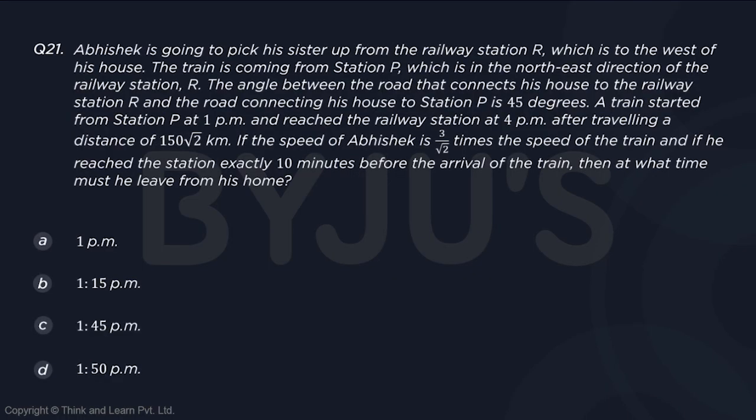Abhishek is going to pick his sister up from the railway station R, which is to the west of his house. So, this is his house. The railway station is to the west.